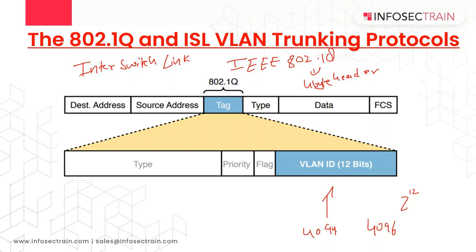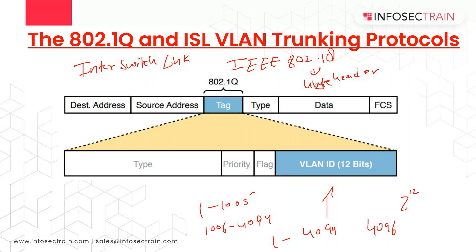Cisco switches break the range of VLAN IDs from 1 to 4094 into two ranges: the normal range and the extended range. All switches can use the normal range — VLANs with values from 1 to 1005. Only some switches can use the extended range, with VLAN IDs from 1006 to 4094. The rules for which switches can use extended range VLANs depend on the configuration of VLAN Trunking Protocol (VTP).